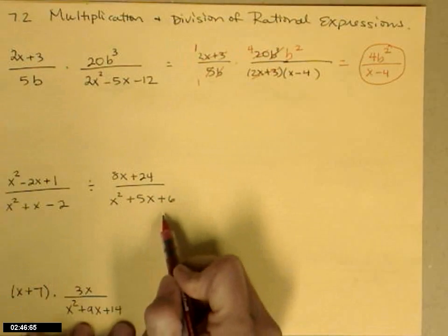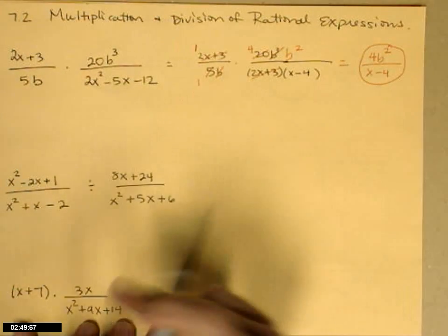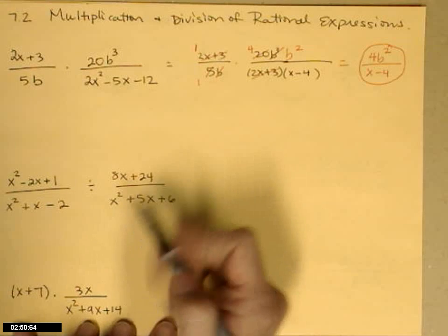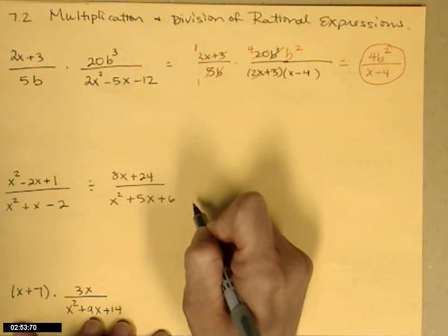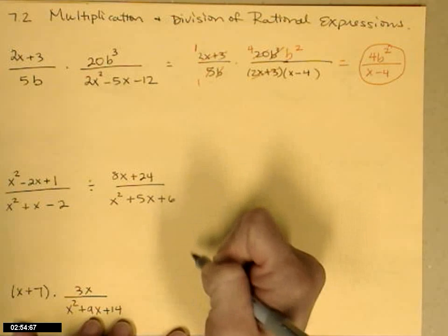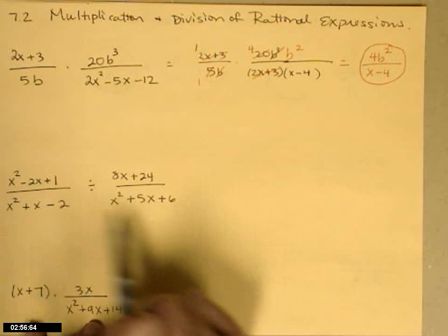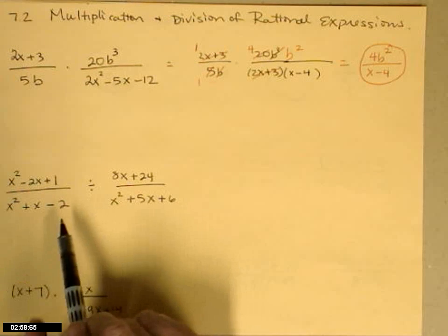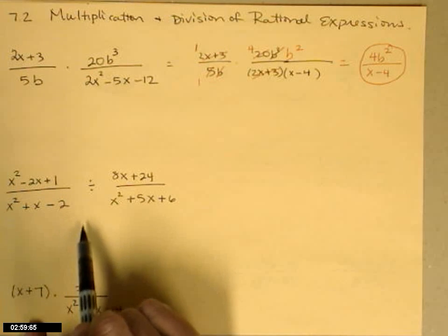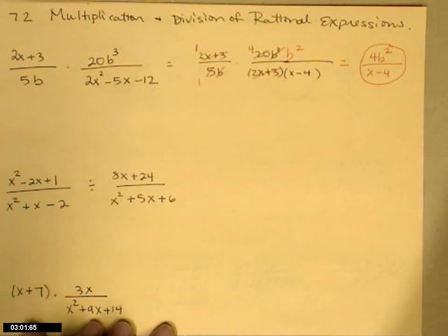Next example — this is a division problem. When you divide two fractions, remember we write the second one flipped and multiply. This looks like I have a lot of factoring to do, so I'm going to go ahead and write the factoring over here so that I have enough room to finish.